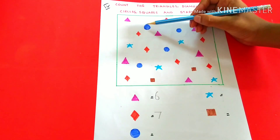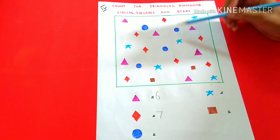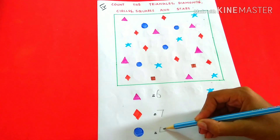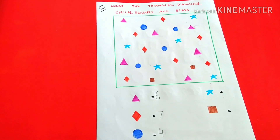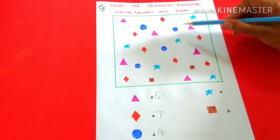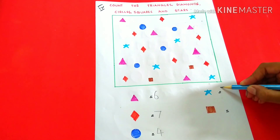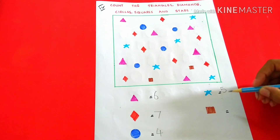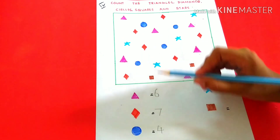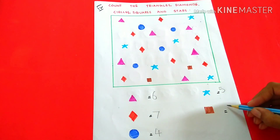Circles: 1, 2, 3, 4, 5. 5 circles. Squares: 1, 2. 2 squares.